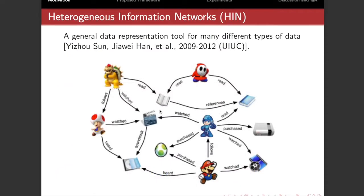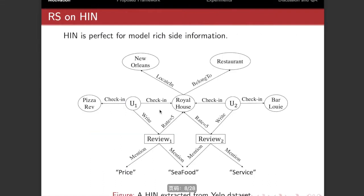And here we have the heterogeneous information networks, called HIN in short, which is a general representing tool for different types of data, as shown in this figure. One node represents different entities like people or movies, and edges represent different relations like followers or pictures. In fact, HIN is perfect for our goal, unifying all kinds of side information. See the example, which is a HIN extracted from the Yelp data set, which we use in the experiments.